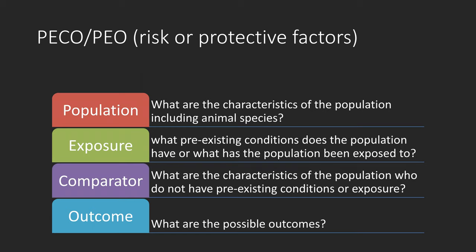PECO, or PEO, is an equivalent framework for the association of environmental and other exposures with health outcomes. PECO stands for population, exposure, comparator, and outcome. What pre-existing conditions does a population have, or what has a population been exposed to? The comparator refers to the characteristics of the population who do not have pre-existing conditions or exposure.